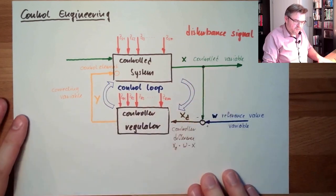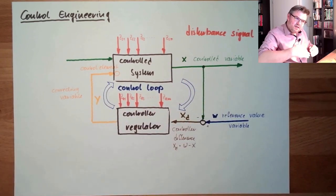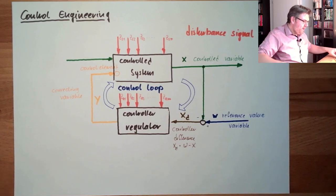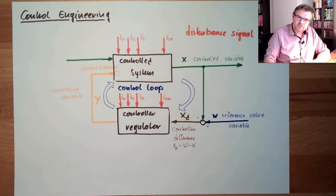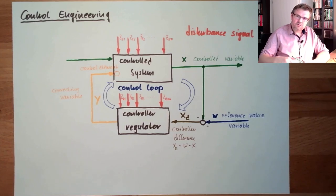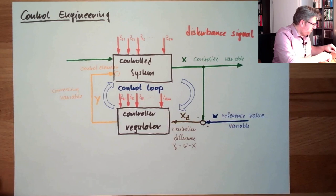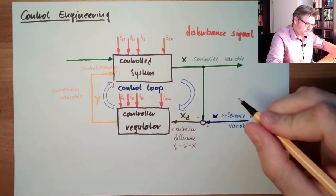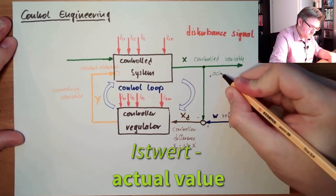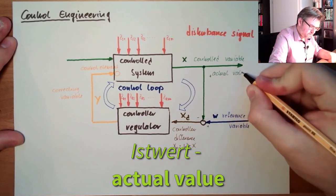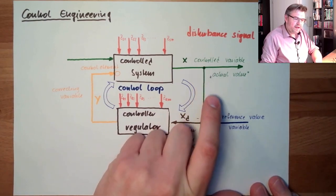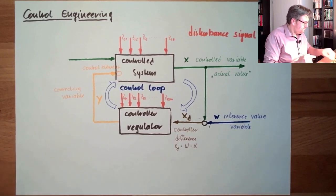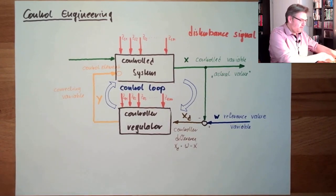Now, the controlled variable is a signal over time. If we are talking about the actual value of the controlled variable — so the value it has right now — then it's not called the controlled variable, it's called the actual value. It's a slight difference, but it needs to be mentioned.